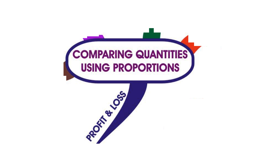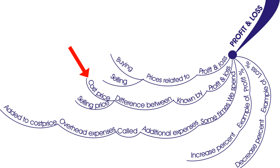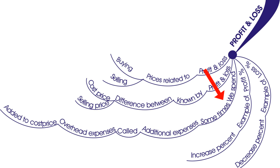Let us see our third branch — it is about profit and loss. Profit and loss is always calculated on cost price. Profit and loss is known by finding the difference between cost price and selling price. Sometimes we spend additional expenses called overhead expenses, which are added to cost price.